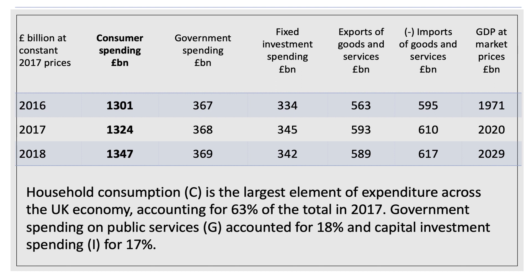You'll see from the table that household spending on goods and services is easily the biggest single component of aggregate demand in the UK, as it is in many advanced high-income countries. Household spending in 2017 was about 63–64% of the total. Government spending on public services — education, health, etc. — was 18%; we don't include things like pensions and unemployment pay because this covers only public services. And capital investment spending was 17%, pretty low compared to some fast-growing emerging market economies. So consumption tends to dominate the components of aggregate demand for the UK.